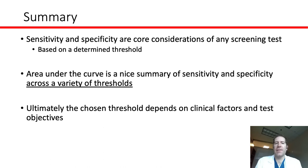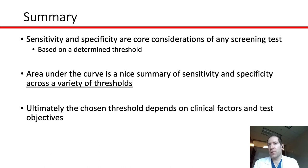In summary, sensitivity and specificity are core considerations of any screening test, and these are based at a single threshold. The area under the curve of an ROC curve is a very nice summary of sensitivity and specificity across a variety of thresholds, giving a good way to compare different markers in the screening setting. However, ultimately the threshold that's chosen and how you interpret that threshold in a certain population is what determines whether or not a biomarker is used.